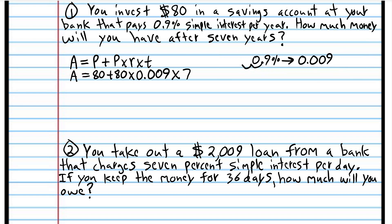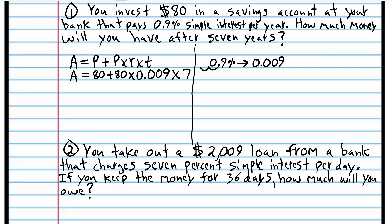So now we've got all our numbers plugged in and we're ready to go. We have multiple operations — addition and multiplication. We have to use the order of operations agreement, which tells us how to interpret this expression. The order of operations agreement tells us to multiply first, using the acronym PEMDAS. The general rule is to multiply starting with the operation farthest to the left.